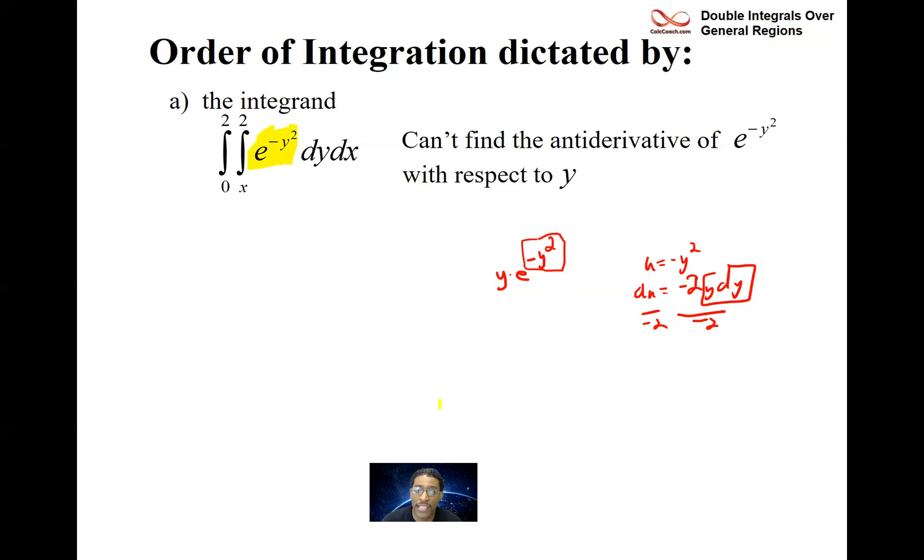Now the integral is set up as y first. I want to talk for a second about being able to interpret what the region is. Like no one said the region is bounded between this curve and all you have is the double integral. So here's how you can go about figuring out what the region is. The region doesn't dictate to us that we should do it as dx dy first. It's the integrand. This must be done as dx dy if you're going to do it at all.